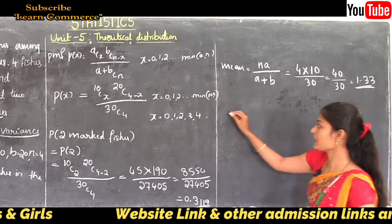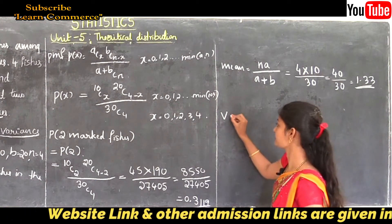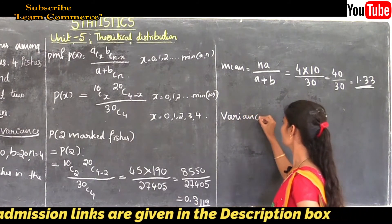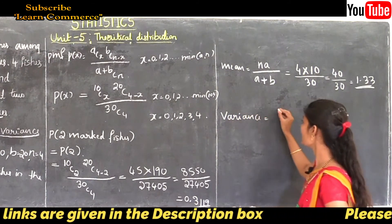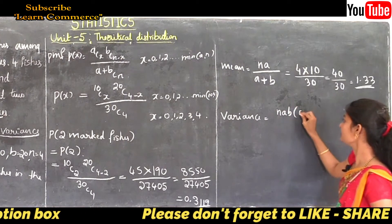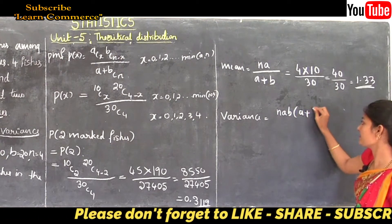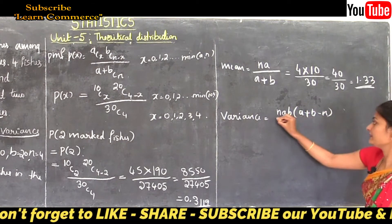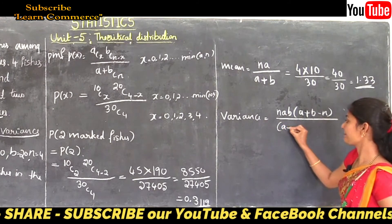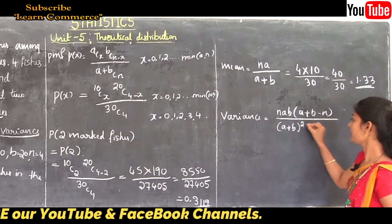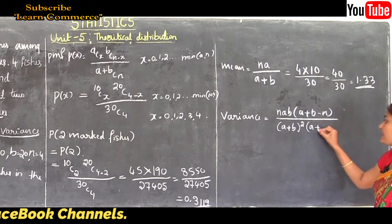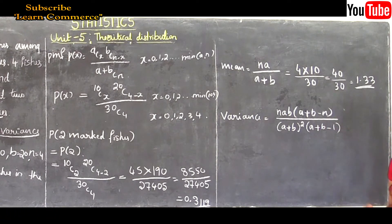Next we need to calculate the variance. The variance formula is: n times a times b times (a plus b minus n), divided by (a plus b) squared times (a plus b minus 1).